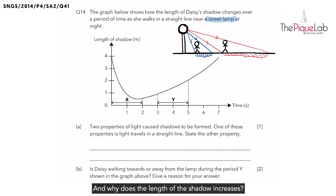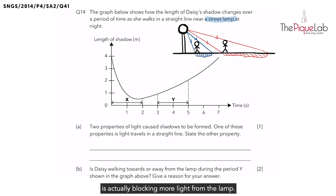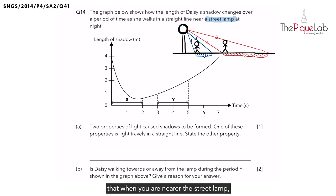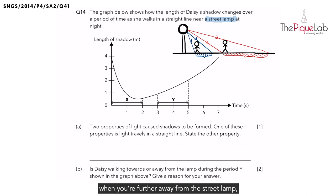Why does the length of the shadow increase? It's because your body is actually blocking more light from the lamp. So we have to remember that when you are nearer to the street lamp, your shadow is shorter. When you are further away from the street lamp, your shadow is longer, as seen in the diagram.